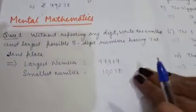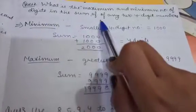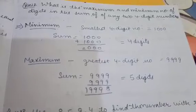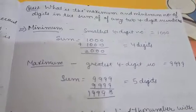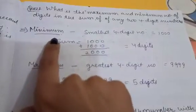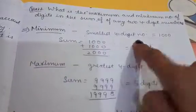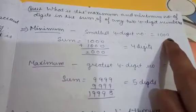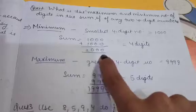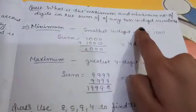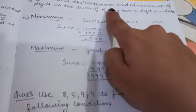Question number two: what is the maximum and the minimum number of digits in the sum of any two four-digit numbers? For the minimum, we add the smallest four-digit number to itself: one thousand plus one thousand equals two thousand. Two thousand has four digits, so the minimum number of digits in the sum of any two four-digit numbers is four.